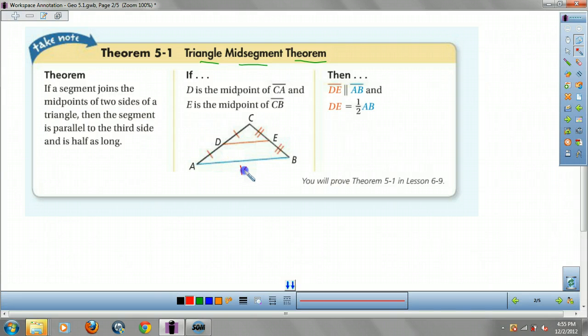Example, if AB was 10 then DE would be 5. Okay. Because it cuts this in half. Okay. I do this too. If this side was 12 then each of these would be 6, right? Just some stuff to think about.